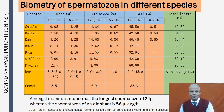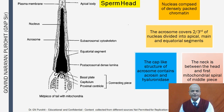Among mammals, the mouse has the longest spermatozoa at 125 microns in length, whereas the elephant spermatozoon is 56 microns. The sperm head is composed of a nucleus with densely packed chromatin, an apical body, and a plasma membrane. It is covered with an acrosome which is also covered by a plasma membrane.